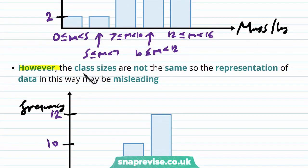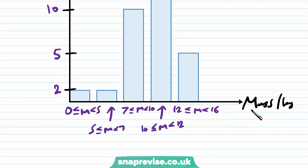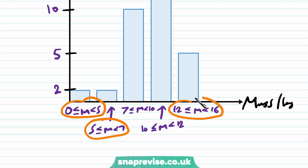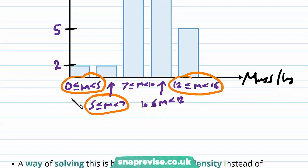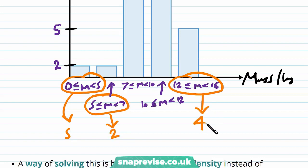However, the class sizes are not the same, so the representation of data in this way may be misleading. Looking at our classes, the first one has size 5, the second one has size 2, and the last one has size 4 — each of these are different class sizes.